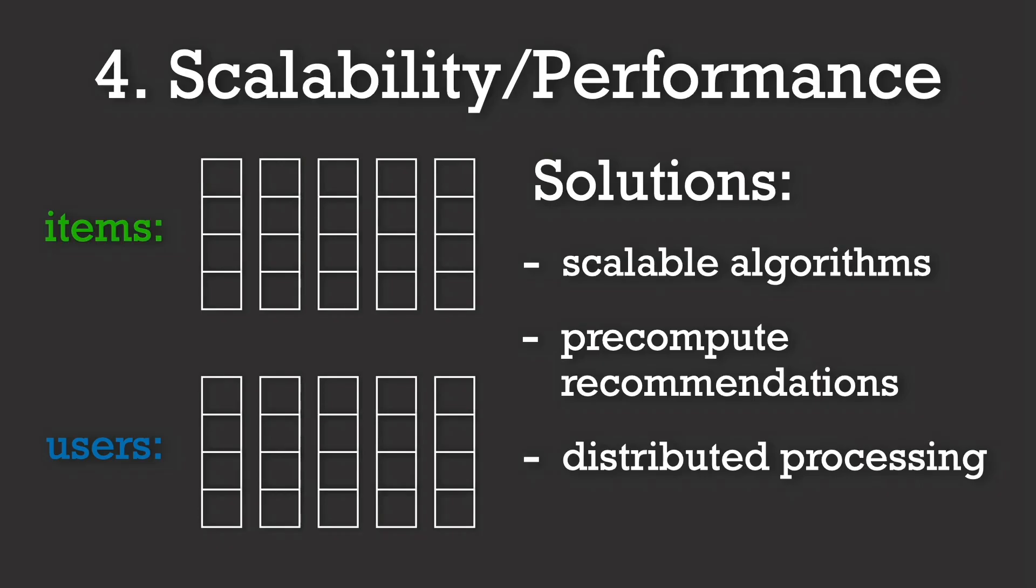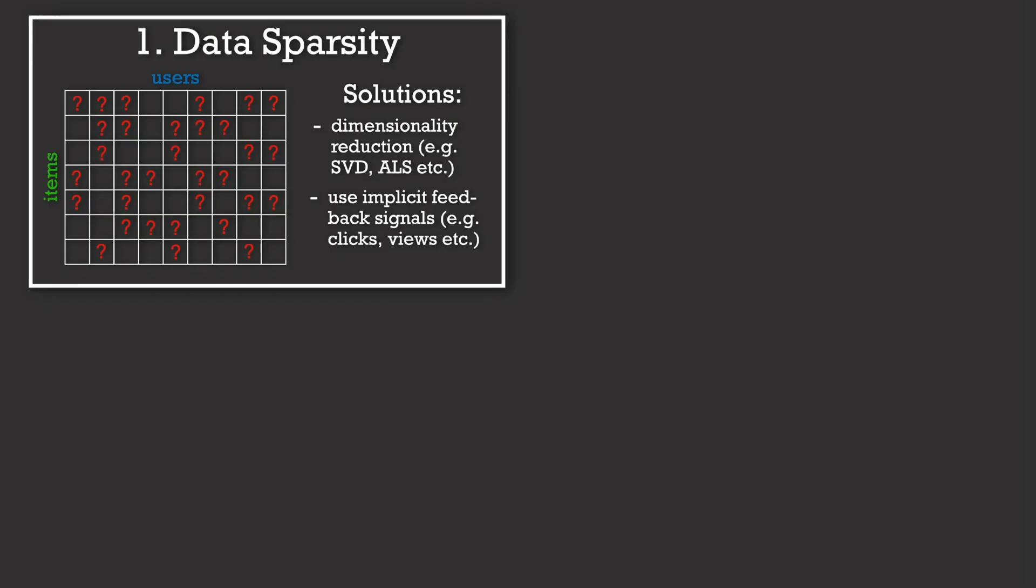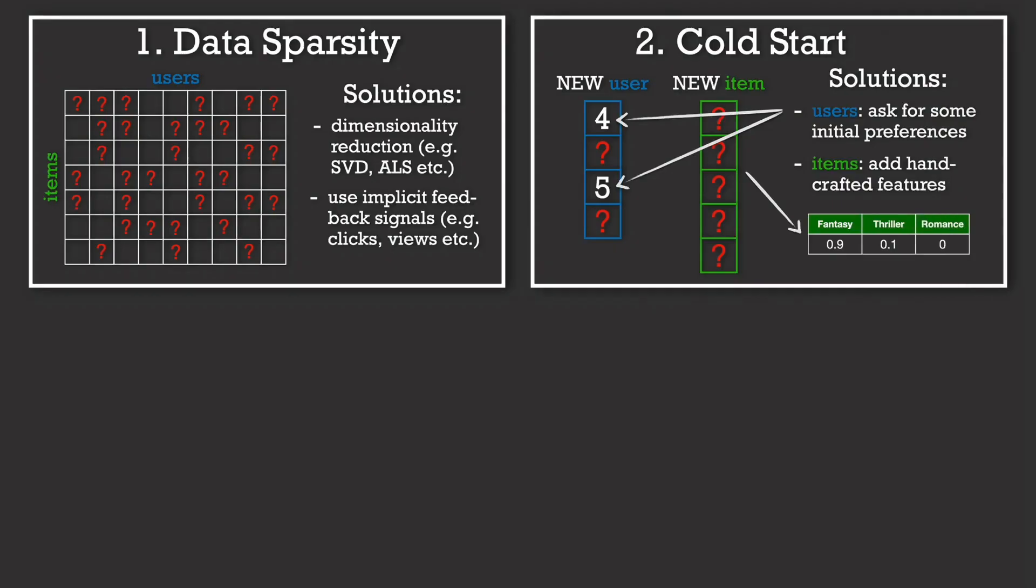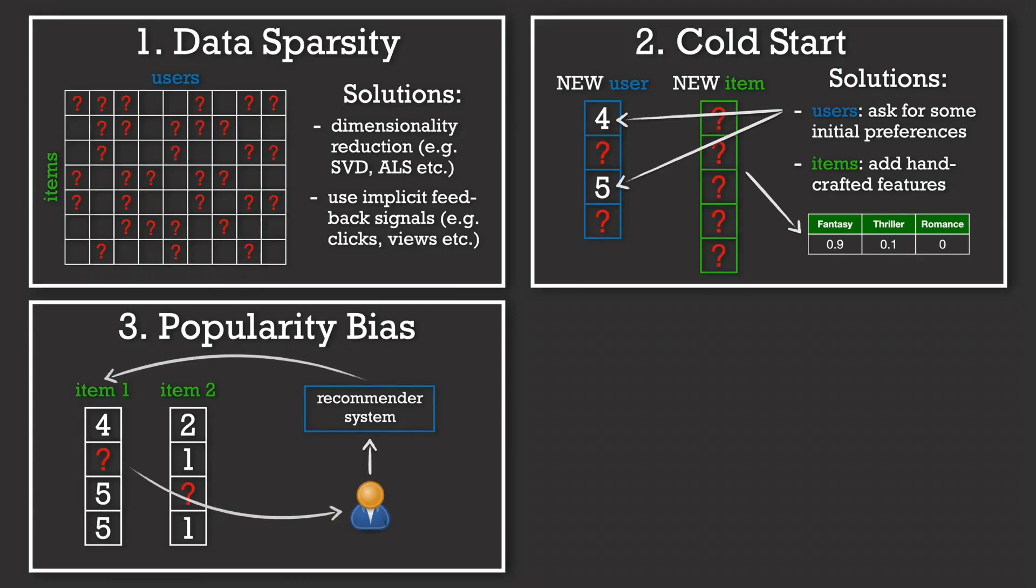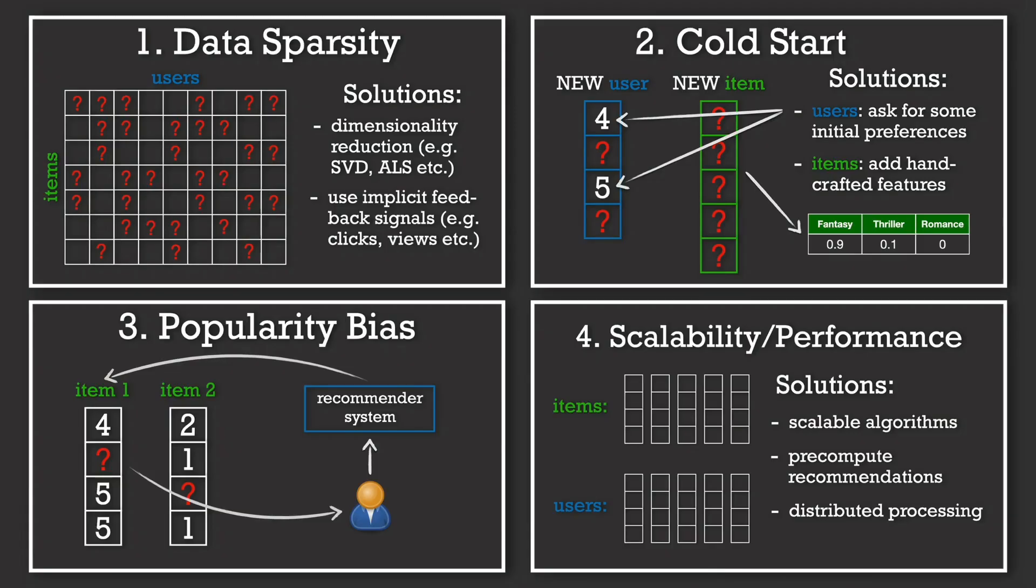And those are the key methods that can help overcome the toughest challenges in building recommender systems. There are certainly more, but those are the most common ones. And to recap, we tackled data sparsity with matrix factorization and implicit feedback, addressed the cold-start problem using initial preferences and content-based methods, mitigated biases with diversity-aware ranking and implicit behavior signals, and ensured scalability with methods like pre-computing and distributed systems.